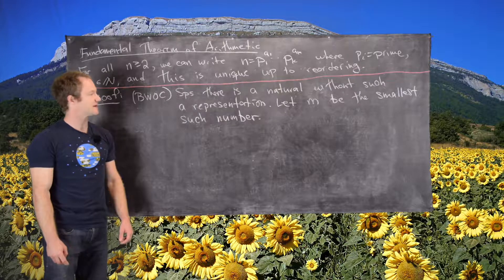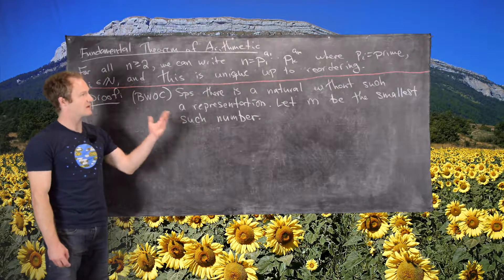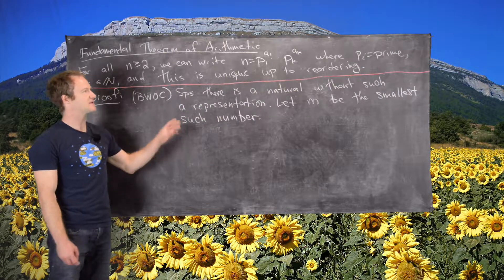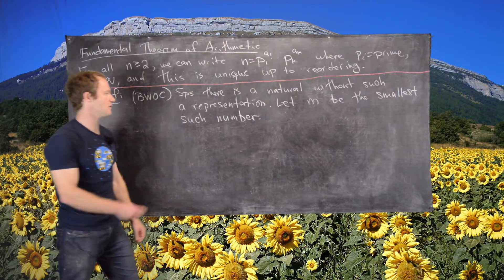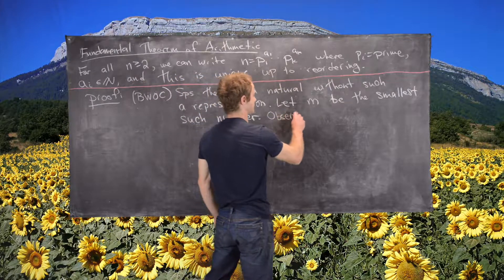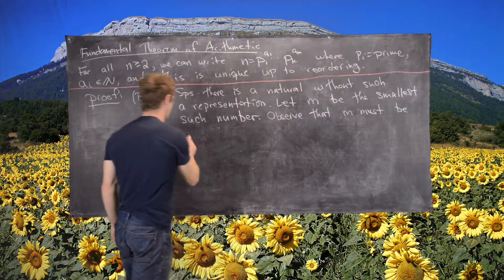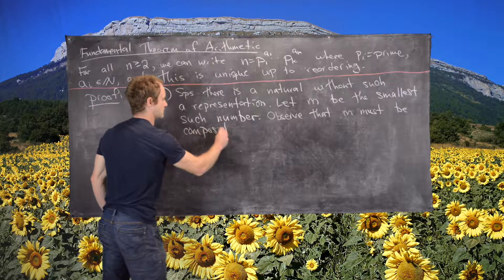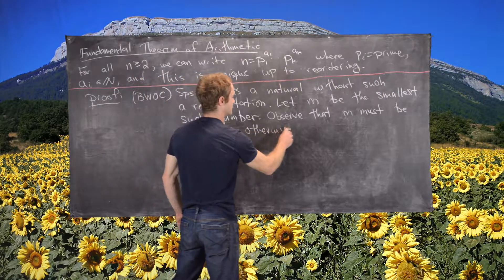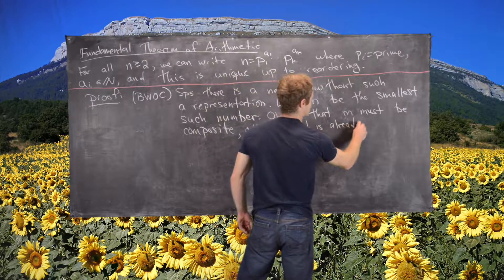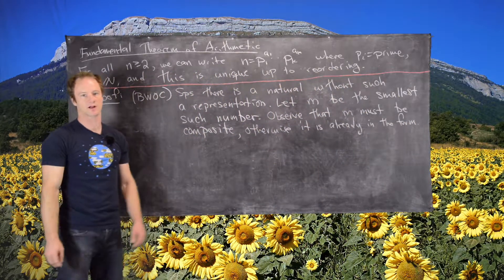Now we'll notice that m must be composite. If m is prime, then m equals p to the first power, but p to the first power is already in this form. So m must be composite — otherwise it is already in the form, meaning the representation as a product of powers of primes.